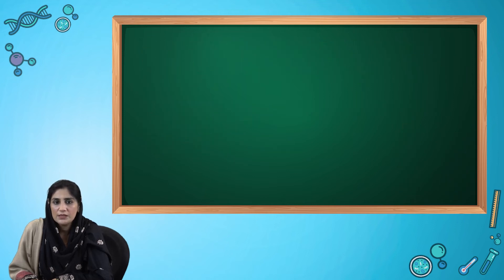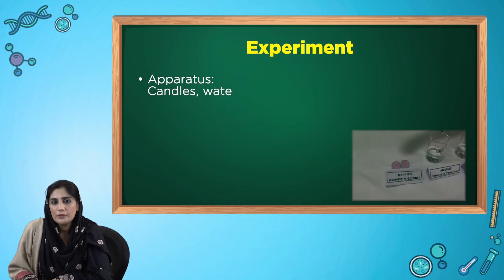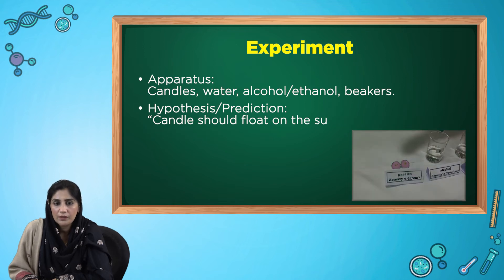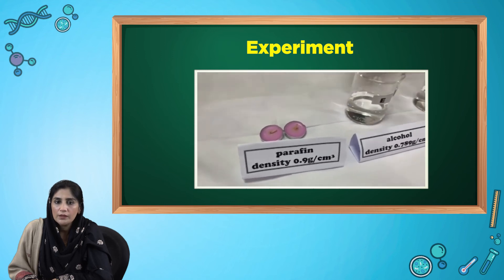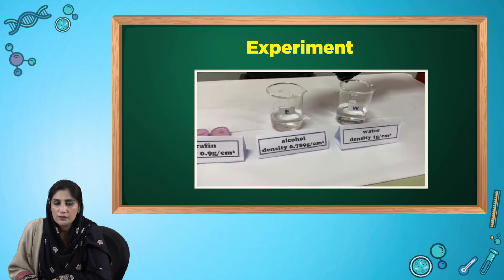Let's perform a few experiments in the science lab. Before that, you need to focus on the scientific inquiry method, in which you always have to follow the displayed steps. In this experiment, we need paraffin wax, water, ethanol and beakers. The hypothesis for this experiment is that candles should float on the surface of water and should sink in ethanol or alcohol. Pause the video for a while and think whether our hypothesis would be correct or wrong depending on the densities displayed on the screen. We can observe that our prediction was correct.